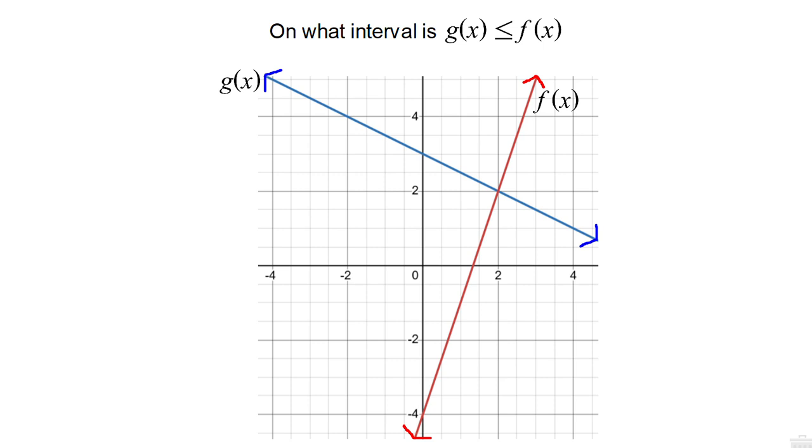For this one, we want g(x) to be less than or equal to f(x). So again, we have to find the intersection point. The intersection point is x equals 2. And then we look at where is the blue function, that's g(x), less than or lower than the red function, f(x). Well, that is to the right of 2.